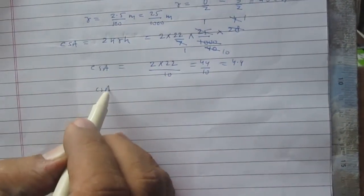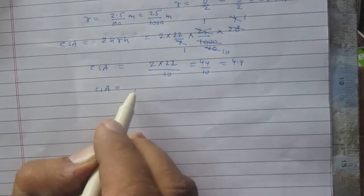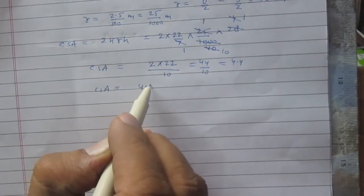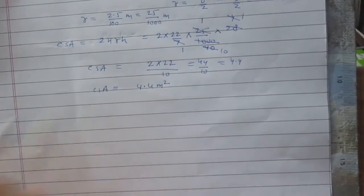So curved surface area of this pipe, or you can say the radiating surface of this system, is 4.4 meter square.